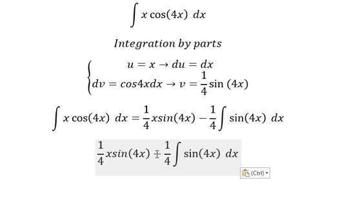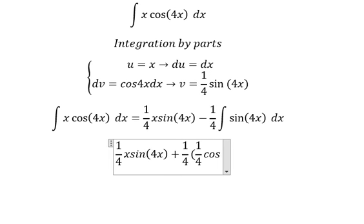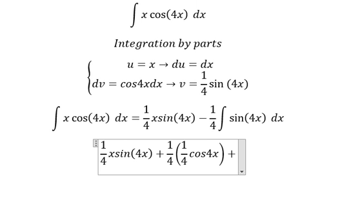The integration with negative sine 4x, we will have positive 1 over 4 cosine 4x and we put C.